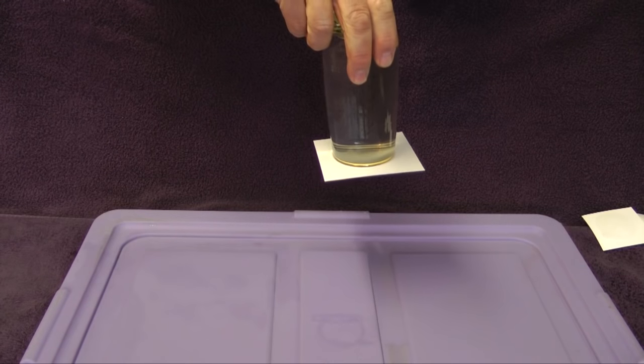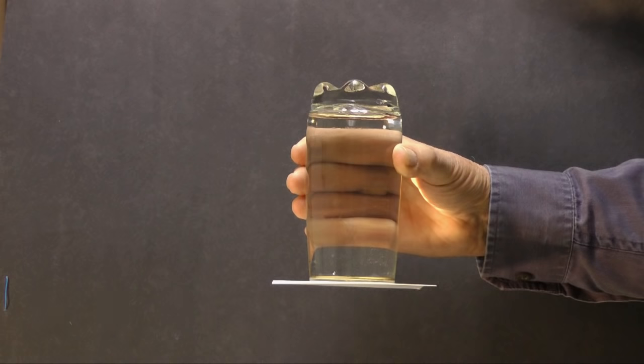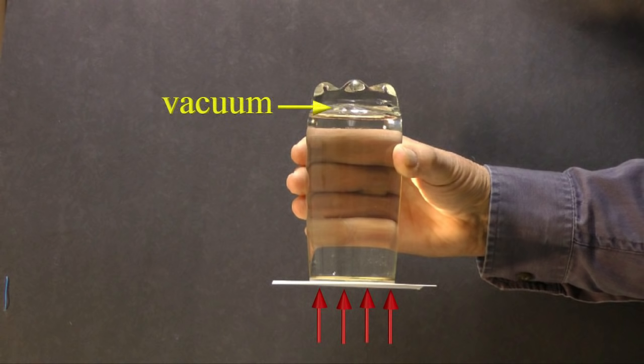Here is the explanation. The card provides a rigid membrane between the water and the air in the room. Air pressure pushes up on the card. Air pressure is not pushing down on the water because there is a vacuum at the top of the water. Air pressure is pushing on the outside of the glass, but this does not affect the water. The only downward force from the water is its weight. The upward force of air pressure easily supports the weight of the water.